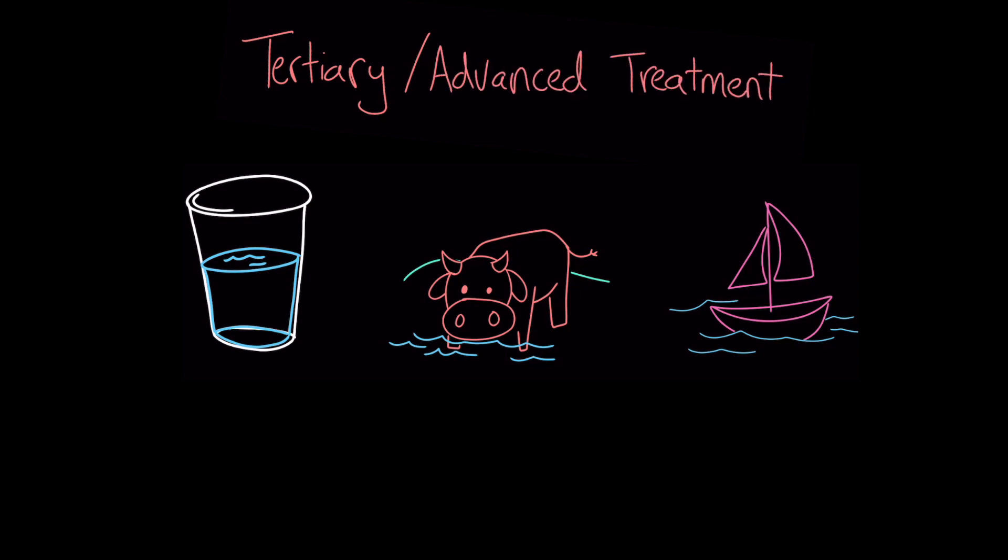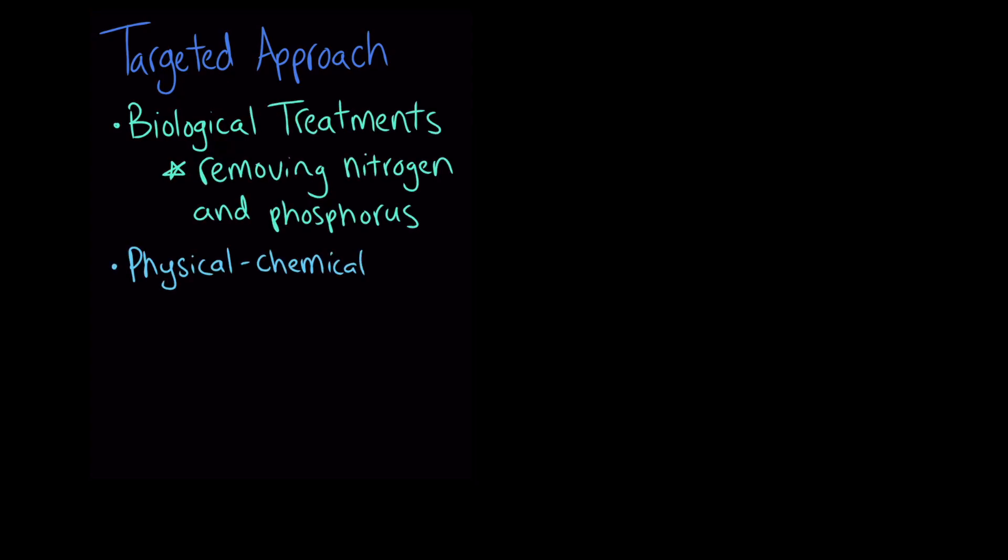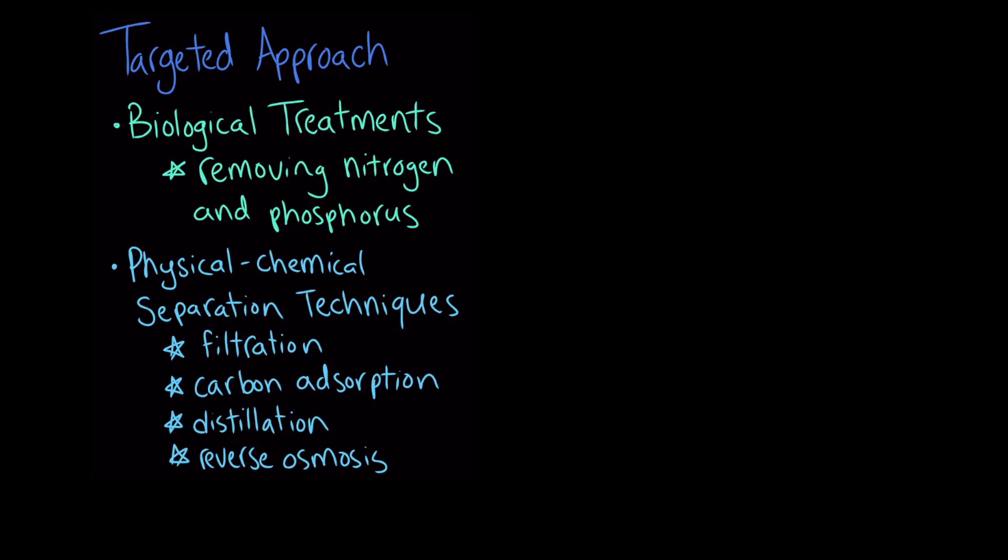Tertiary treatment looks different at different water treatment plants. Sometimes, it uses a more targeted approach to the removal of specific wastewater components. Some examples include additional biological treatments capable of removing nitrogen and phosphorus, or physical chemical separation techniques such as filtration, carbon adsorption, distillation, and reverse osmosis for removing a variety of chemicals.